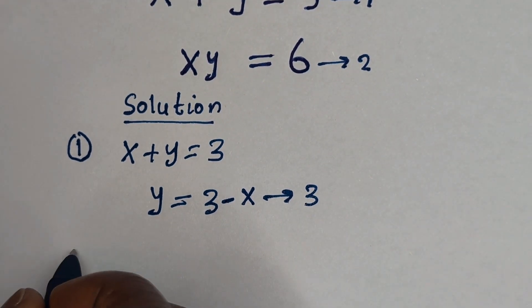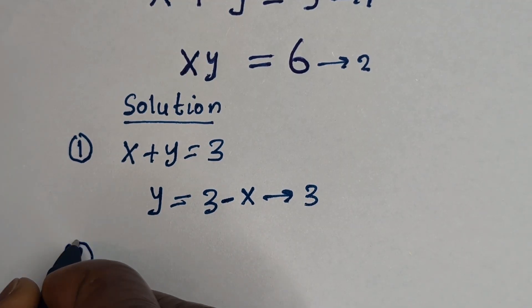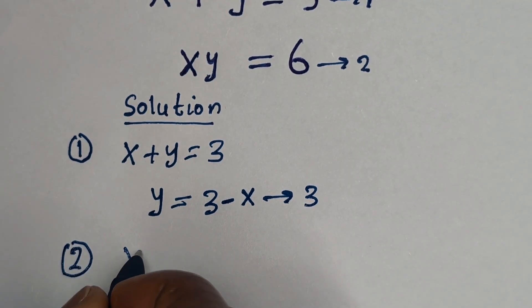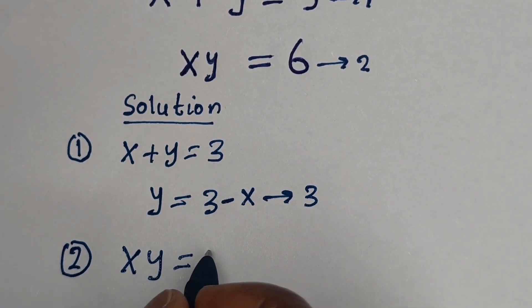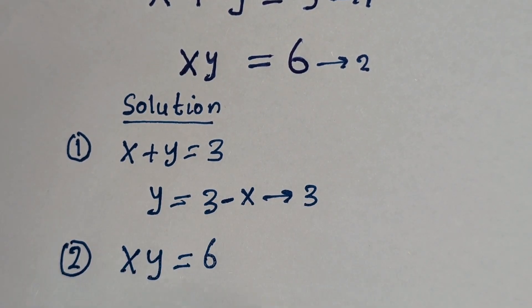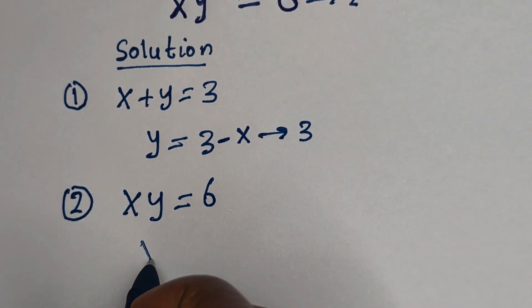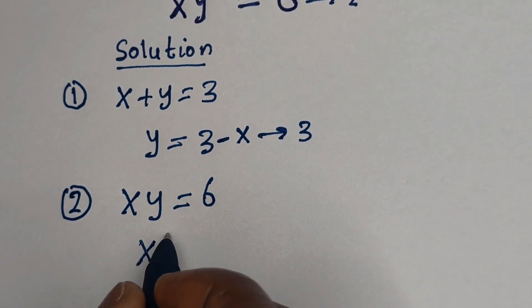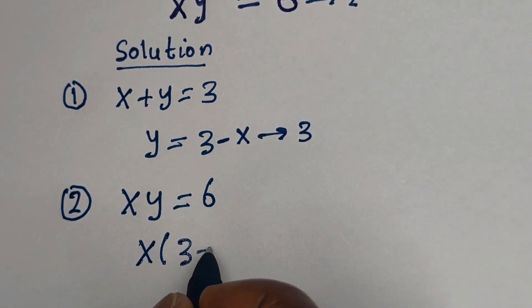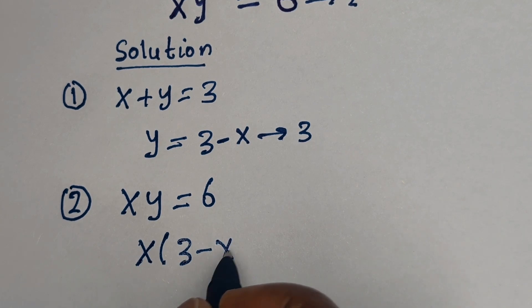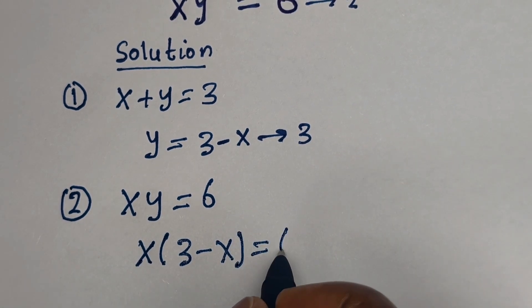And from equation 2, SY is equal to 6. Then let us substitute for Y: S times (3 minus S) is equal to 6.